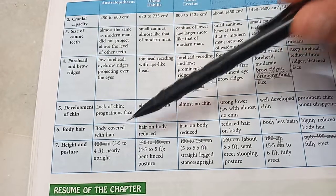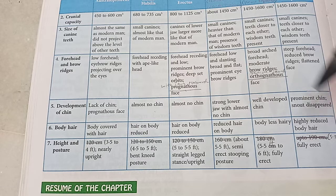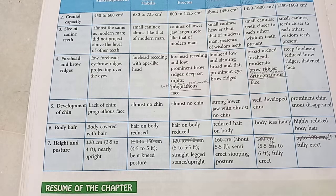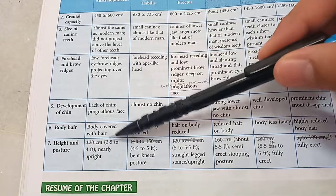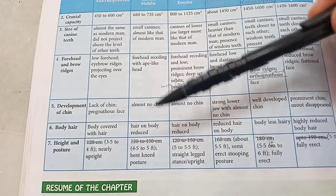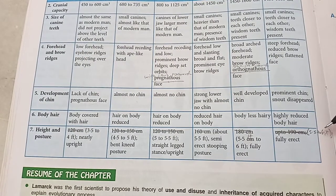Regarding body hair: earlier ancestors had a lot of hair, and progressively less hair through the species, to hardly any hair now — because now we don't need the hair. In the future, say thousands of years from now, evolution can make sure we don't have any hair left on the body. Regarding height and posture: Australopithecus were short, with an average height of 3.5 to 4 feet, which has increased over time to now 5.5 to 6 feet.